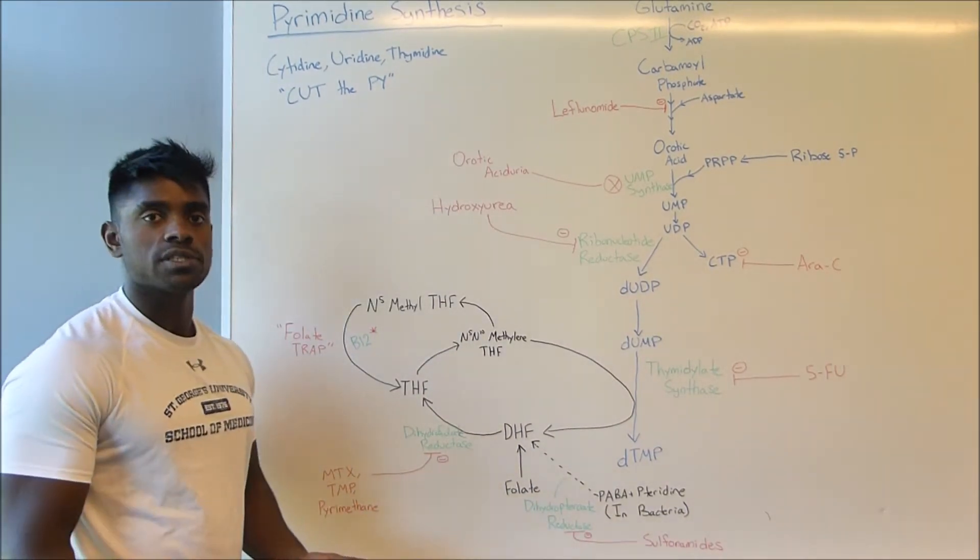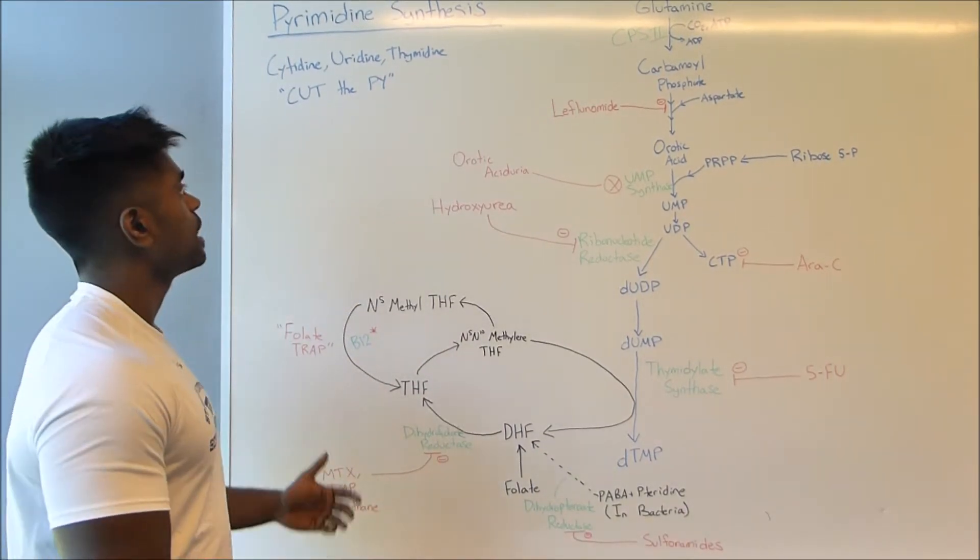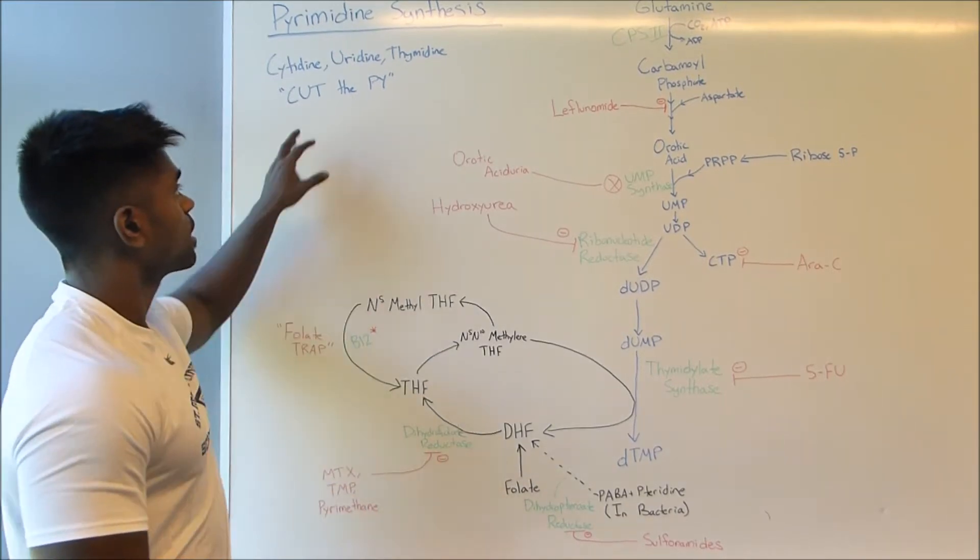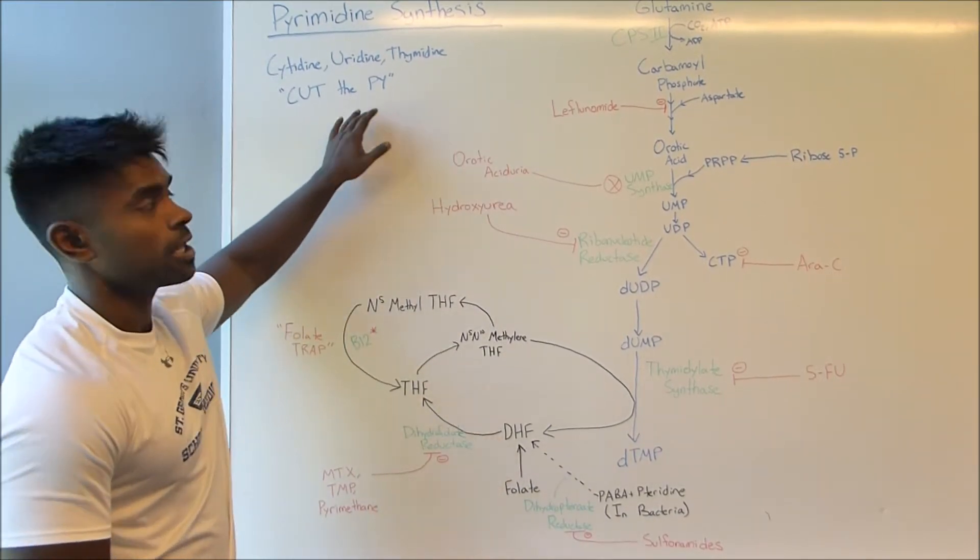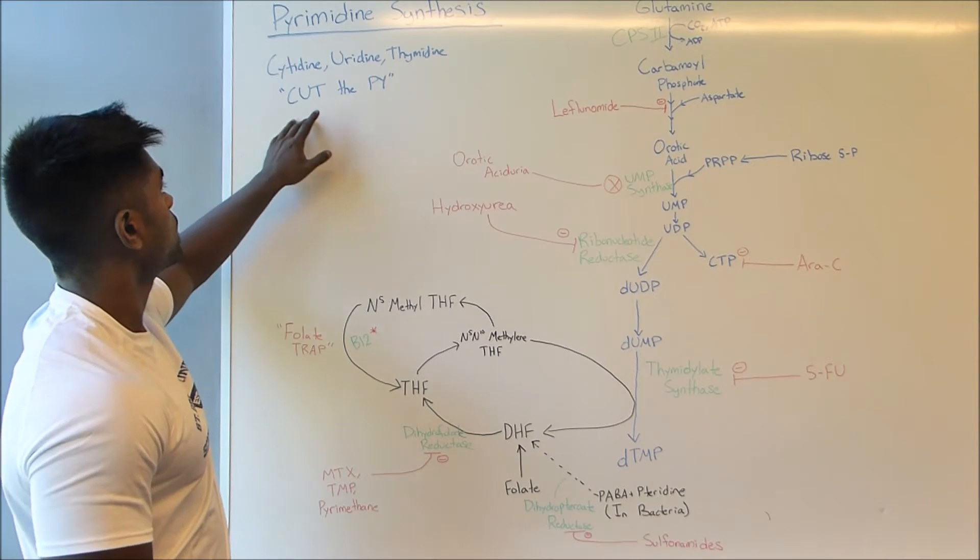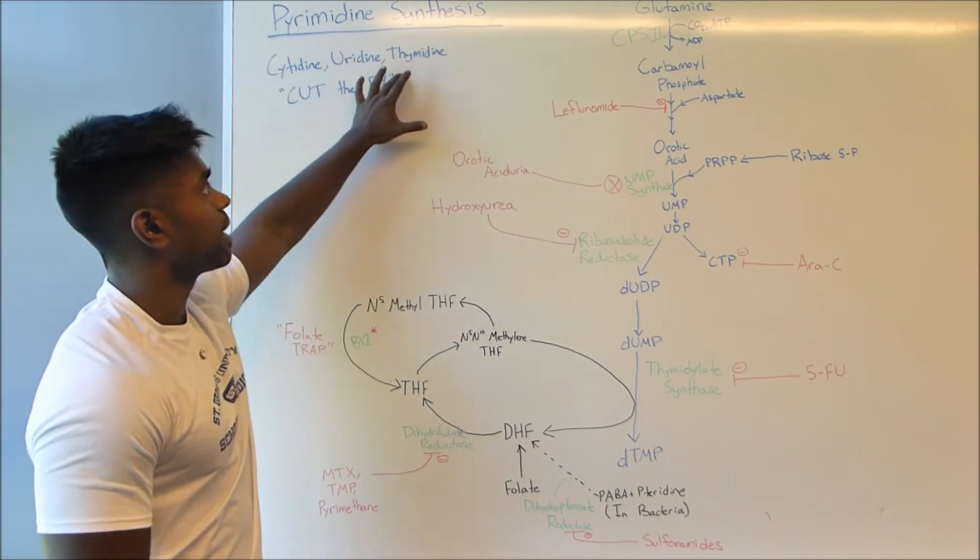Now the first thing we need to know is obviously what are the pyrimidines. First Aid gives us the mnemonic cut the pie, so pie meaning pyrimidines, and cut standing for cytidine, uridine and thymidine.